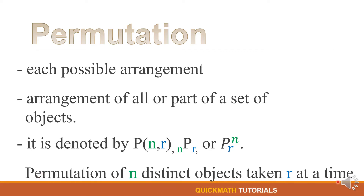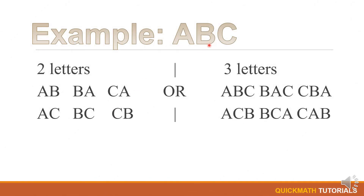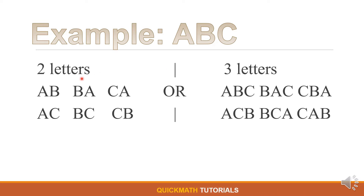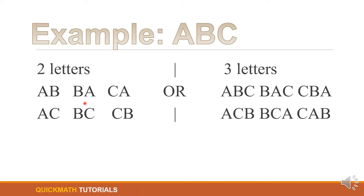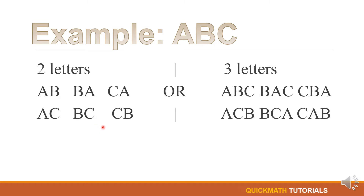This can be read as the permutation of n distinct objects taken r at a time. For example, we have the letters A, B, and C. We will arrange two of its letters. So what will be the possible outcomes? We have AB, BA, CA, AC, BC.